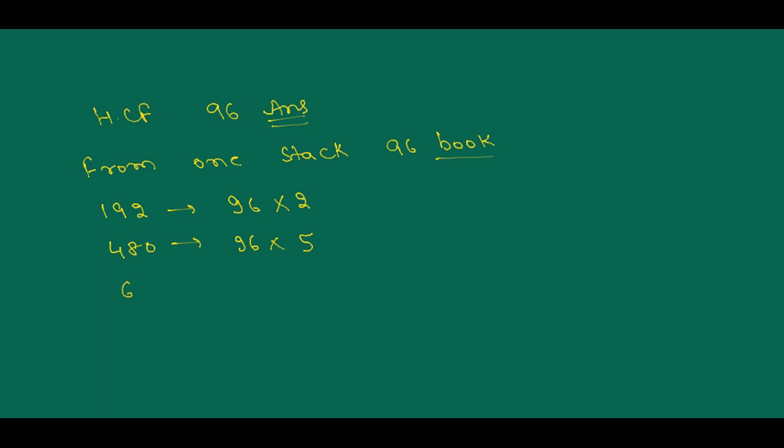And 672, from 672 you made 96 with 7 stacks. See there are so many stacks but number of books are same, 96, 96, 96.